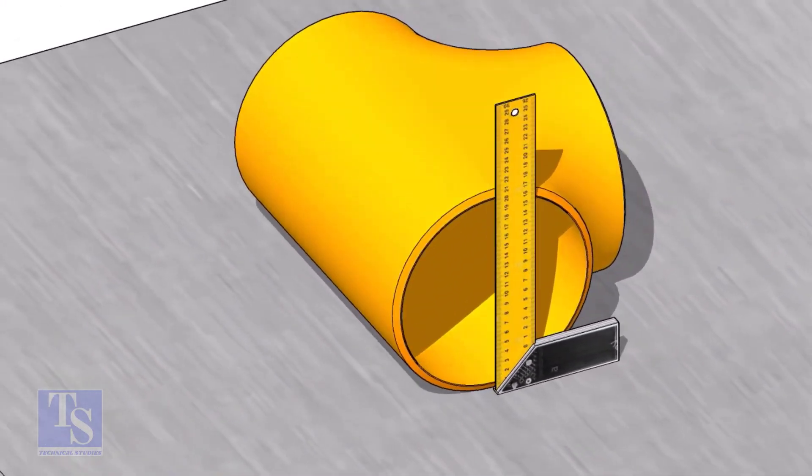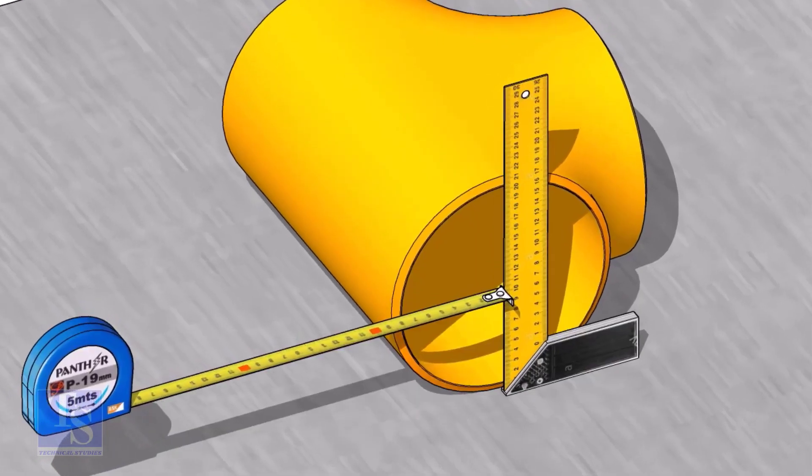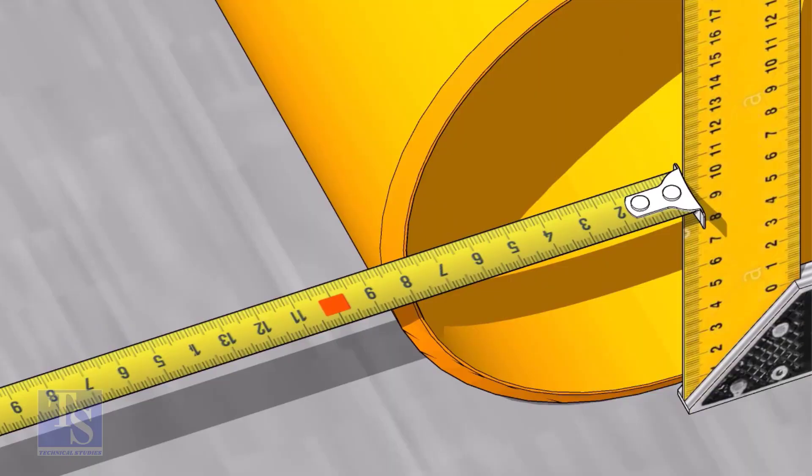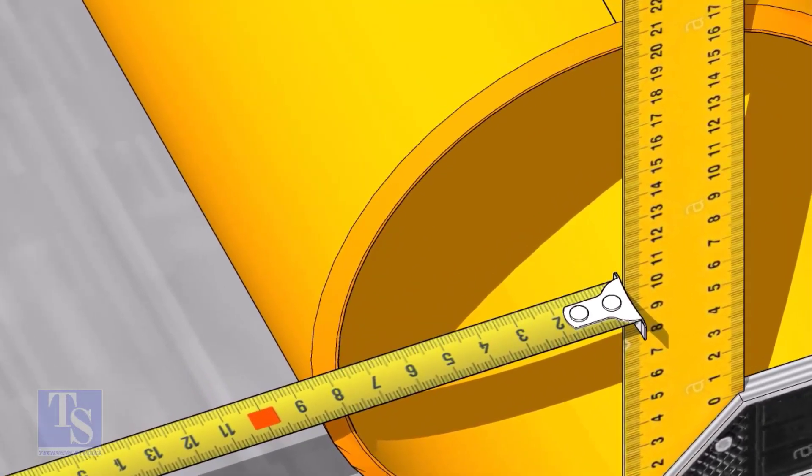Now, put a right angle at the face of the tee, as shown. Move the right angle until its face reaches the center of the tee, which is half OD, 84 millimeters from the outer face of the tee.